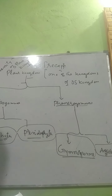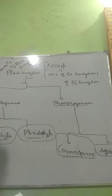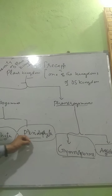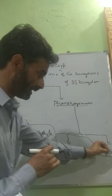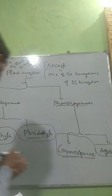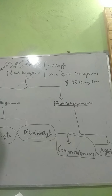Diversity will increase down the taxonomic hierarchy. At division level, we have four groups of plants: Bryophyta, Pteridophyta, Gymnospermae, and Angiospermae.